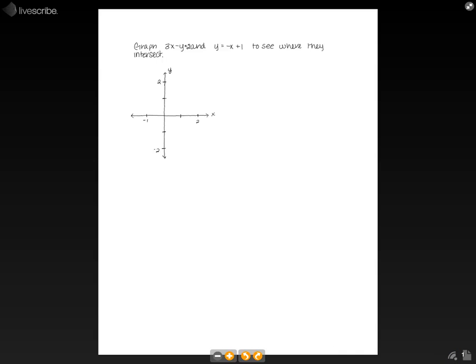In this pen test, we'll use a graph to estimate the solution of a pair of linear equations. So the problem says graph 3x minus y equals 2 and y equals negative x plus 1 to see where they intersect.